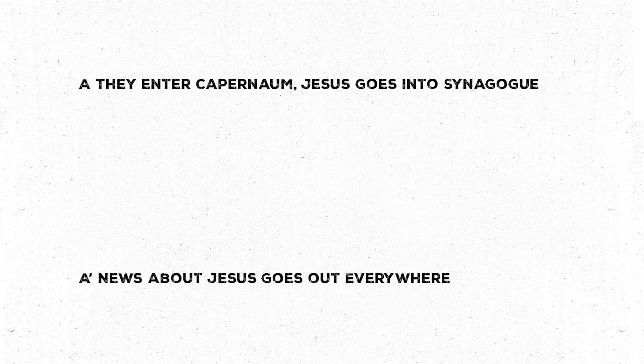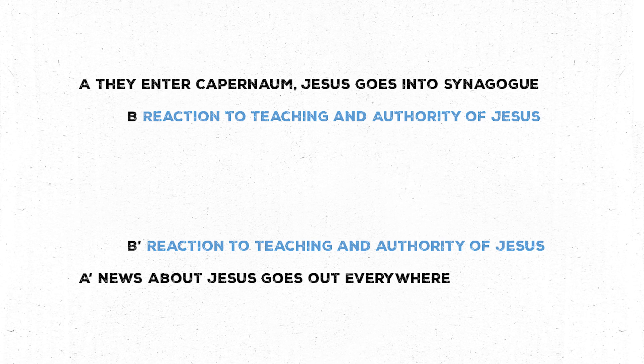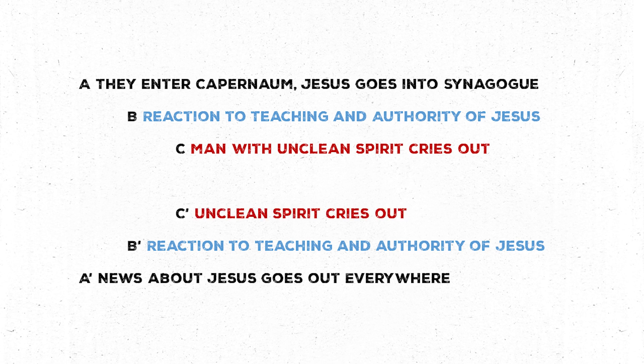Another good place to look for chiastic structures is stories, because a lot of them are arranged that way. For example, the healing of a man with an unclean spirit in Mark 1:21–28. The story begins with them going into Capernaum and Jesus entering the synagogue in verse 21, and ends in verse 28 with the news about Jesus going out everywhere into all the surrounding districts — so there's going in at the beginning and going out at the end. Then in both verse 22 and verse 27 we have the reaction of the people to Jesus' teaching and authority. In verses 23–24, a man with an unclean spirit cries out and challenges Jesus, and in verse 26 the unclean spirit cries out again and leaves. So at the very center is Jesus' statement in verse 25 demonstrating his authority over the unclean spirit and marking the turning point of the narrative.